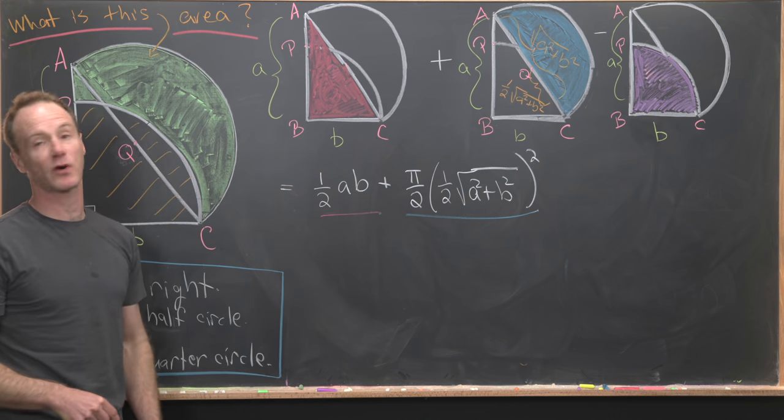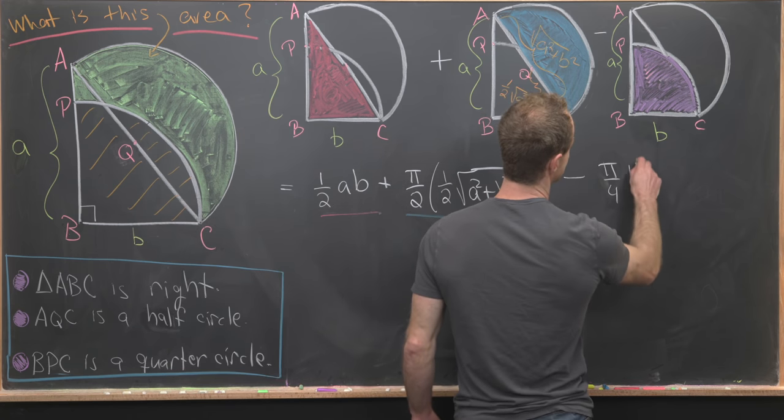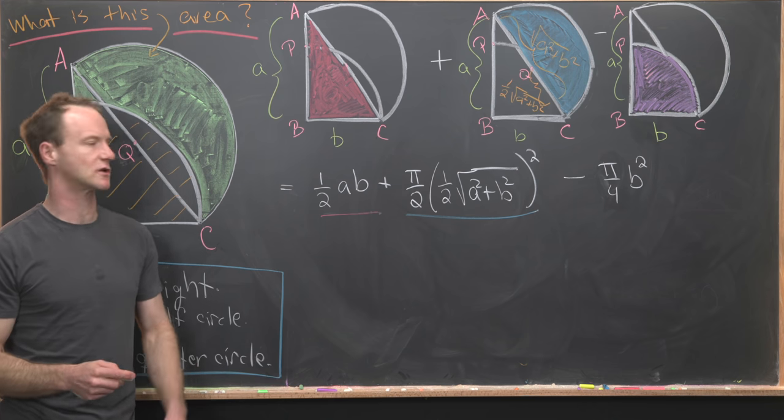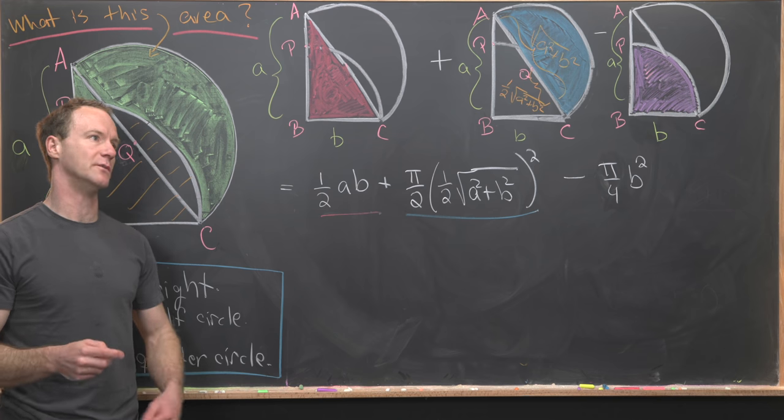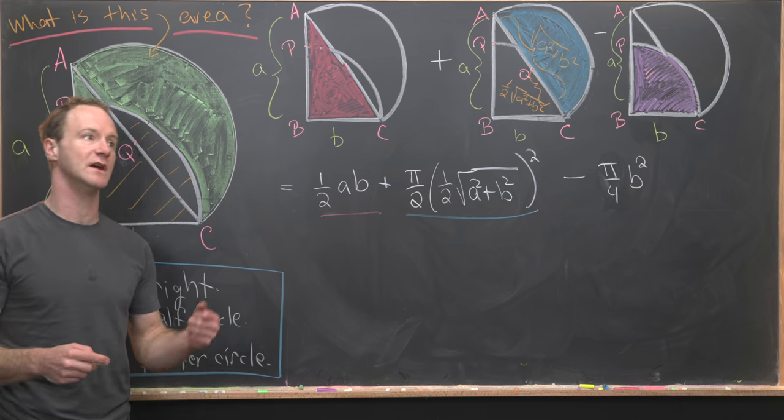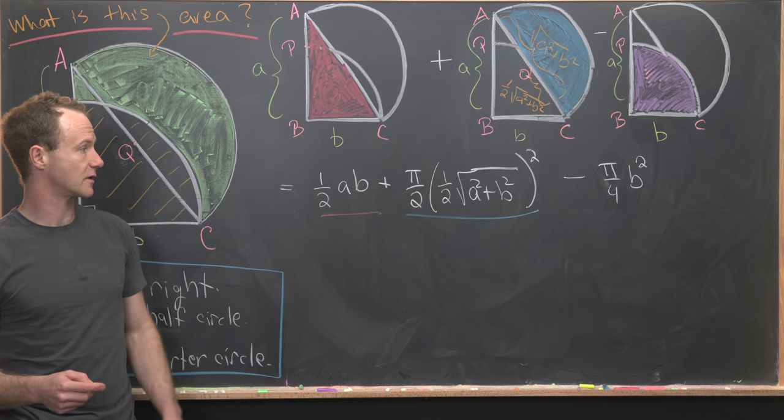Now let's move on to the area of the purple region which we need to subtract. That's going to be pi over four times b squared. We're throughout using that the area of a circle is pi r squared, so the area of half of a circle will be half of pi r squared. The area of a quarter of a circle will be a quarter of pi times the radius squared.